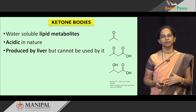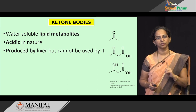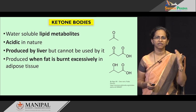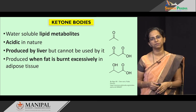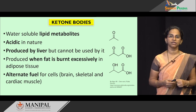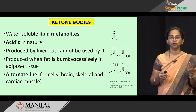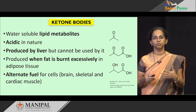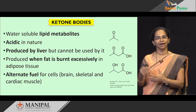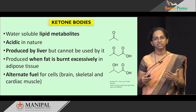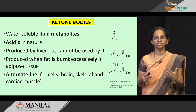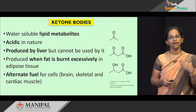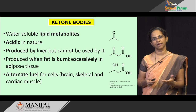Ketone bodies are produced by the liver, but remember — the liver only produces them and cannot use them. When are they produced? When fat in the adipose tissue is being burned at a very fast rate, ketone bodies are produced. Why does the body produce them? They are an alternative fuel for the brain or the muscles — skeletal muscle, cardiac muscle — because the body is trying to save glucose for certain cells like RBCs which thrive only on glucose. When a person is fasting or undergoing starvation and needs energy for brain, skeletal muscle, and cardiac muscle, all this will be taken over by ketone bodies. It is the alternative fuel in periods of crisis like starvation.